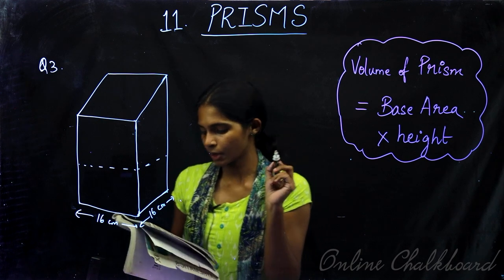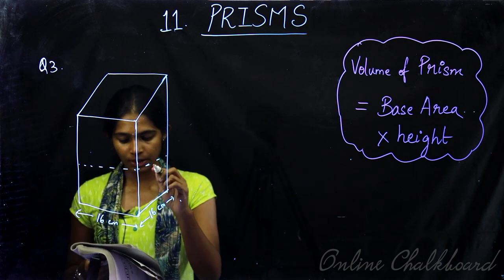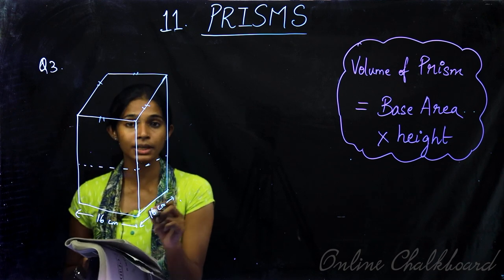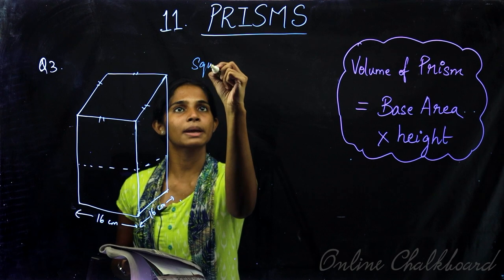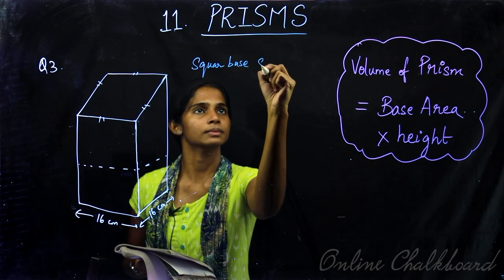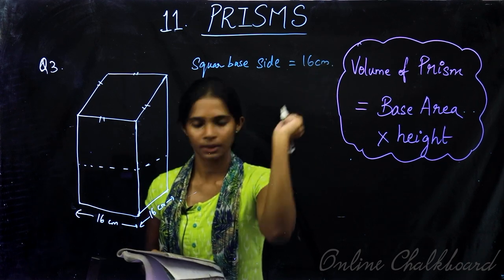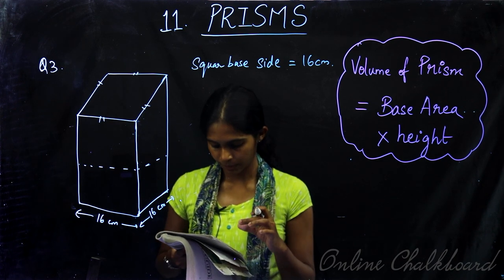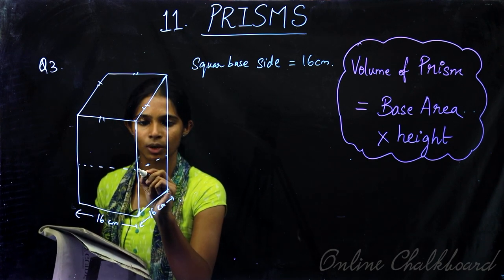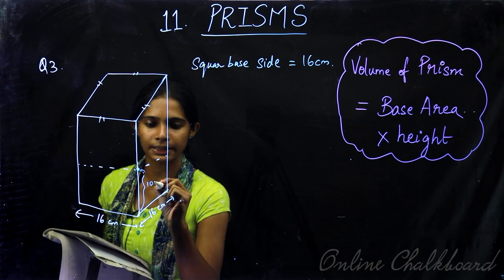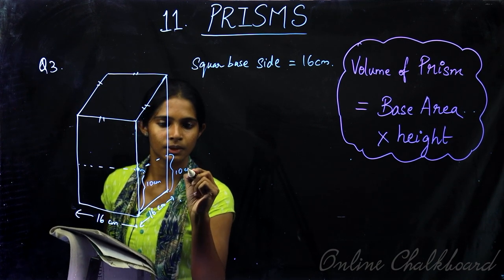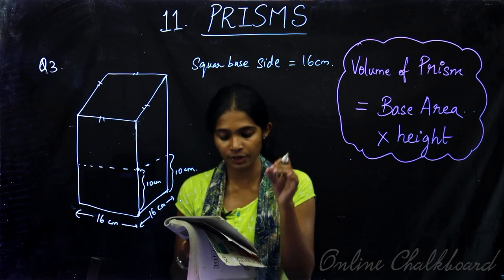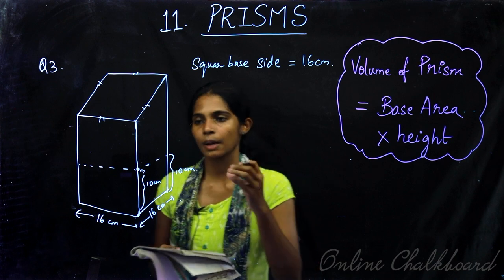We have a hollow prism with a square base of side 16 cm. Water is already 10 cm high in this prism. We are going to immerse a solid cube of side 8 cm into the water. We need to find by how much the water level rises — call this height x.